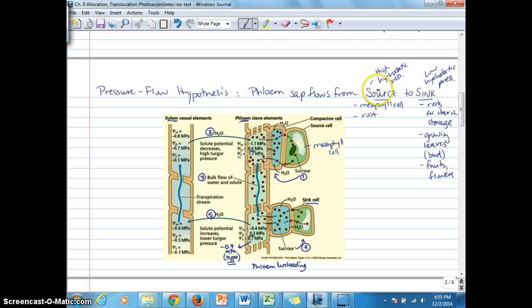Phloem sap moves from a source to a sink in the plant. The source end of phloem is nearby some place where sucrose is accumulating, like just after photosynthesis when sucrose accumulates in the mesophyll cell, or perhaps if it was stored over time in the root as starch that breaks down into glucose or sucrose and is mobilized to other parts of the plant towards a sink such as growing leaf buds, fruits, or flowers.